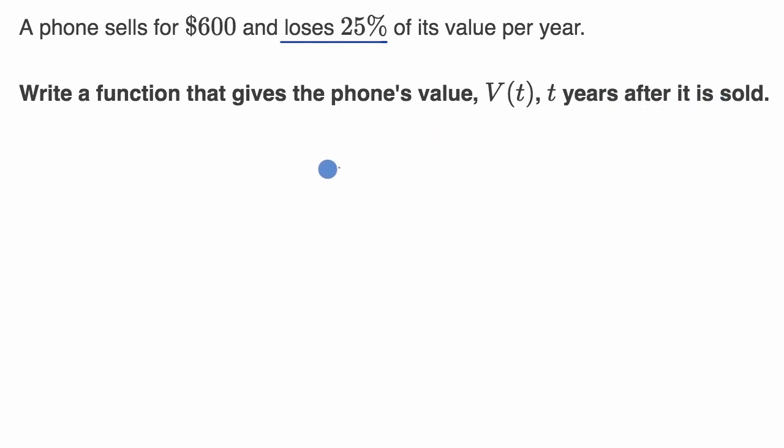So pause this video and have a go at that before we work through it together. All right, so let's just think about it a little bit. I could even just set up a table to think about what is going on. So this is T, and this is the value of our phone as a function of T.